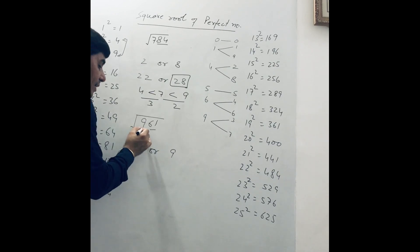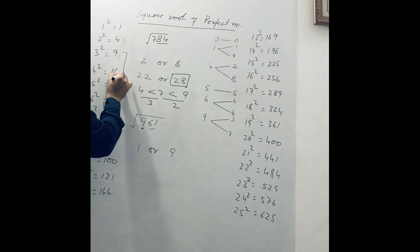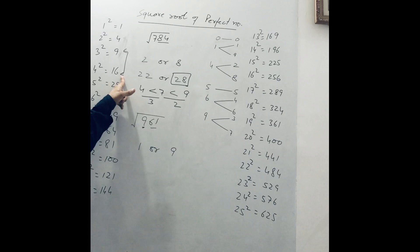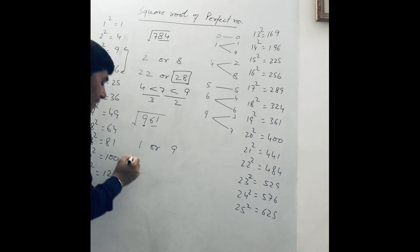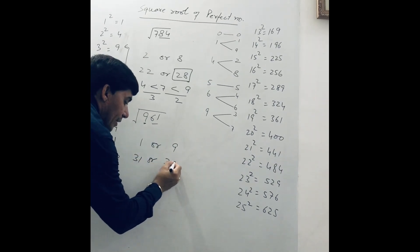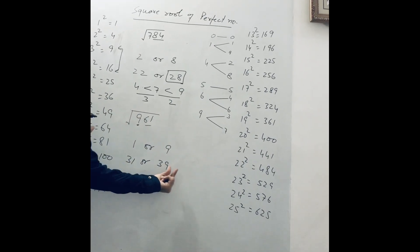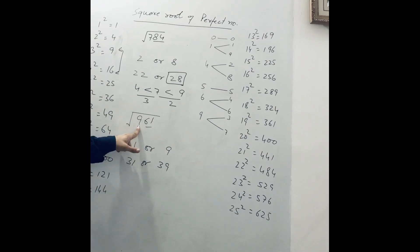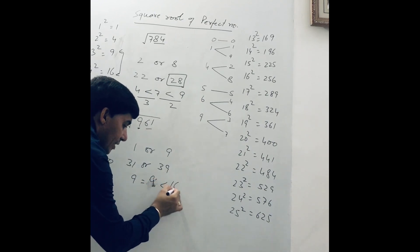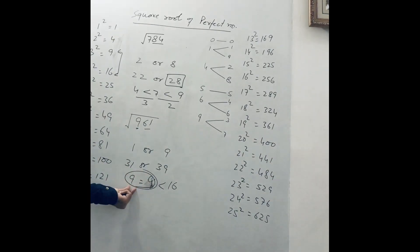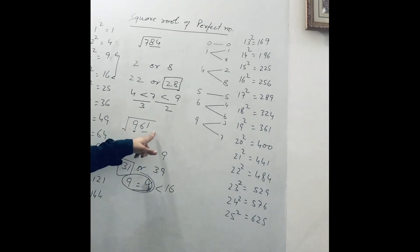After that, we see 9. Where does 9 lie in the table? 9 lies between 9 and 16, meaning between 3² and 4². The lowest value is 3. So we write 3, 1 or 3, 9 — meaning the square root of 961 is either 31 or 39. Now we see 9 is equal to 9, which is less than 16, so 9 is nearest to 9 itself. Therefore, 31 is the square root of 961.